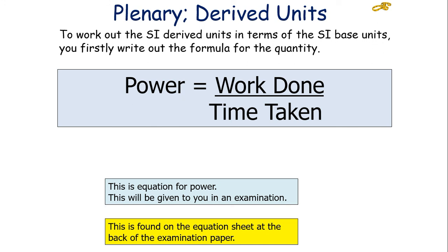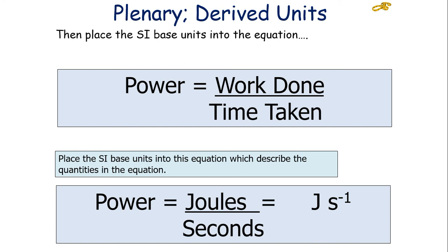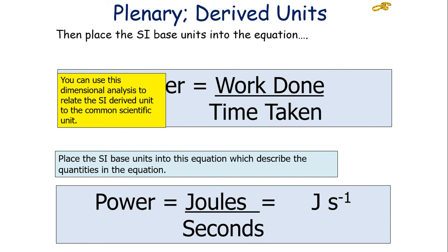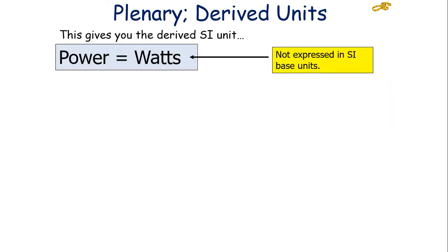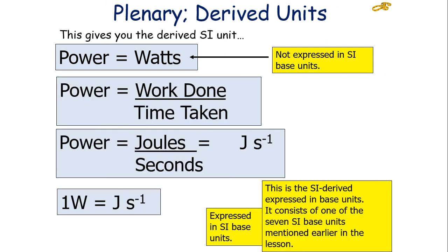To do this, you write out your equation for your quantity. We know that power is equal to work done over time taken. This is found on the equation sheet at the back of the examination paper. What you then do is place your SI-base units into this equation, which describes the quantities in your equation. We know work done is measured in joules, and we know that time is measured in seconds, so it's joules over seconds, so joules seconds to minus one. You can use this dimensional analysis to relate the SI-derived unit to the common scientific unit. However, there's an issue in this particular idea, because whilst we've got power equals watts, which is not expressed in SI-base units, so that's the SI-derived unit, so we said power was work done over time taken, so power is equal to joules over seconds, so one watt is one joule per second. However, this is not the final answer, because the joule is not a base unit.